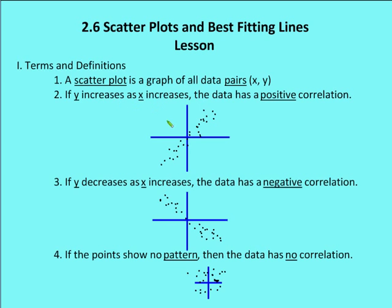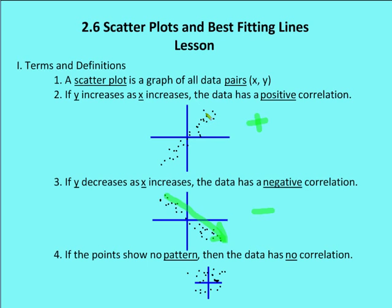We say that there is a positive correlation if Y increases as X increases. So as X increases, Y is also increasing — I have a positive slope. As Y increases and X increases, I say that there is a positive correlation for all the scatter plot data pairs. Now if as X increases, Y decreases, then I say that the correlation is negative. When X increases and Y increases, we call it positive. When X increases and Y decreases, we say that it has a negative correlation.